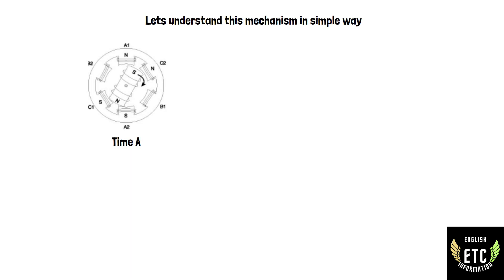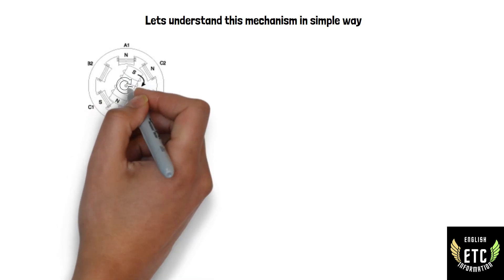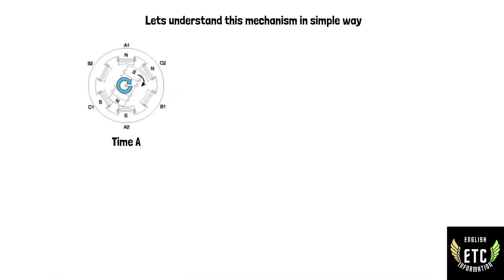At time A, the stator poles A1 and C2 are the north poles and the opposite poles A2 and C1 are the south poles. The south pole of the rotor is attracted by the two north poles of the stator and the two south poles of the stator attract the north pole of the rotor.